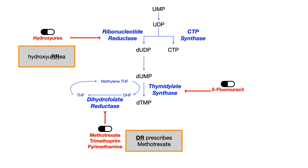That's it for pyrimidine synthesis. It's a little lower yield than purine synthesis, but if you know the drugs and the enzymes they inhibit, and you know the overall flow of the pathway, you'll be fine for USMLE and COMLEX. The biggest takeaway is the drugs and which enzymes they inhibit, not necessarily the pathway itself. Keep your eyes posted for part three, which will be the salvage pathway.